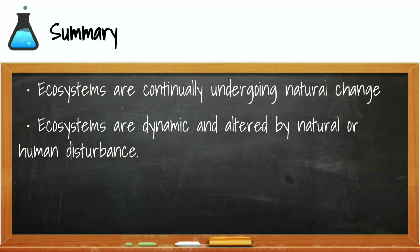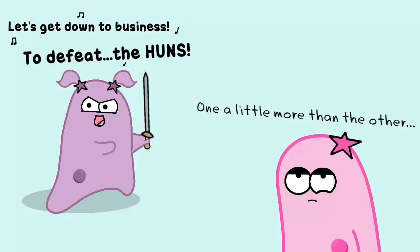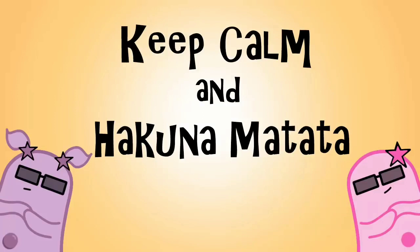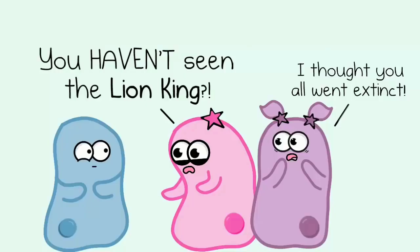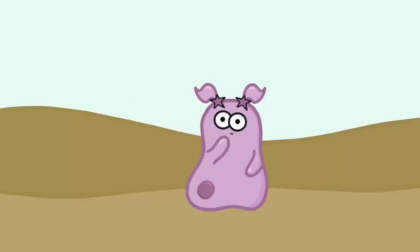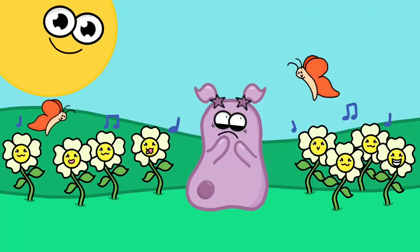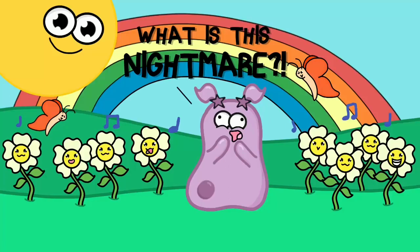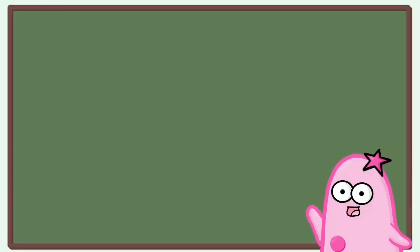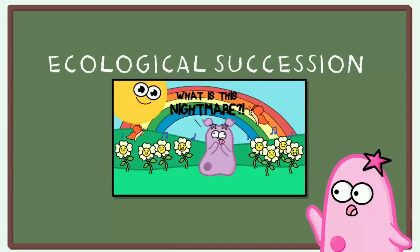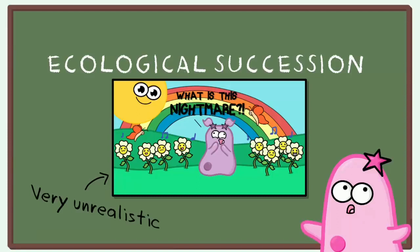Now let's watch a fun Amoeba Sisters video that reviews the important details of ecological succession. The end of The Lion King shows all this life growing back — plants growing, animals returning — which is reminiscent of ecological succession, though the movie version is an ultra-fast impossible version. Ecological succession is a process over time of organisms in an ecological community. A community involves many populations living together in an area — for example hippos, lions, giraffes, trees, and shrubs all together.